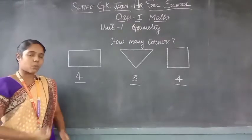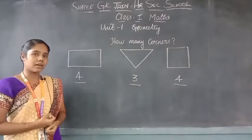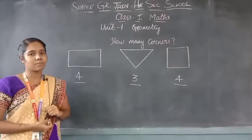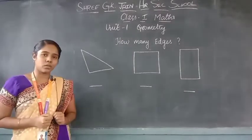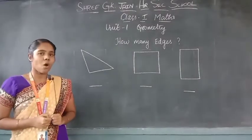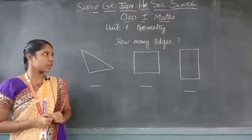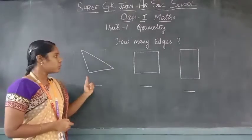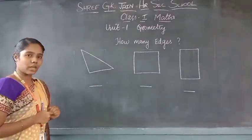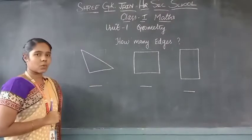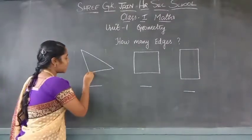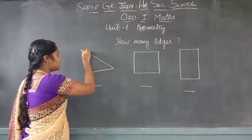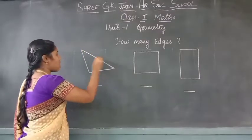So, you know what a corner is. The corner is the point where the lines meet. We have counted the corners of the given shapes. Now we are going to count the edges of the given shapes. What are edges? The line joining 2 points — these are the edges.